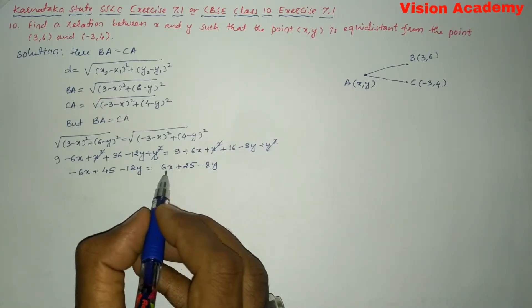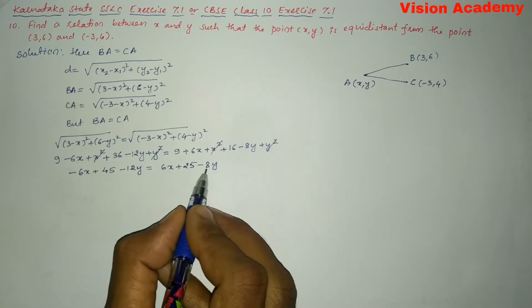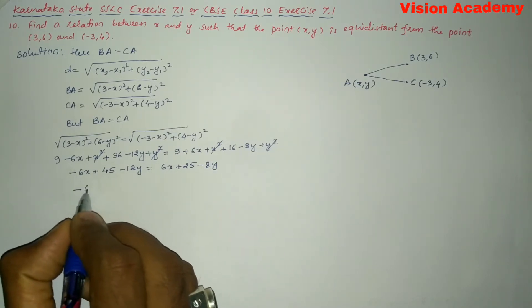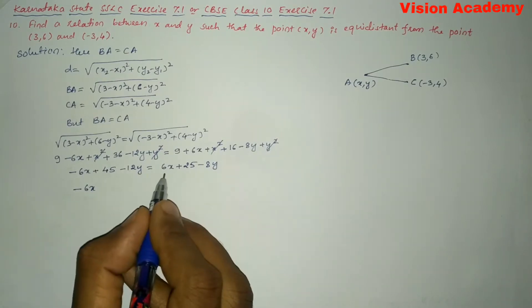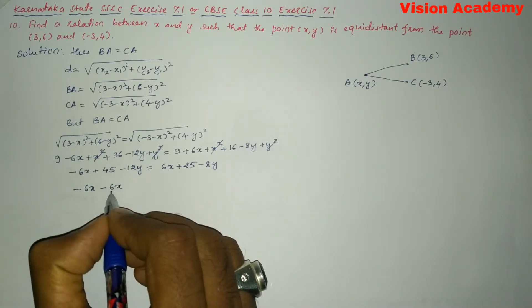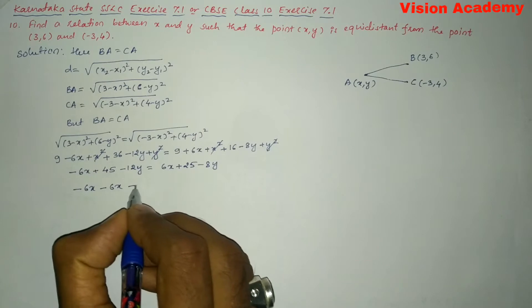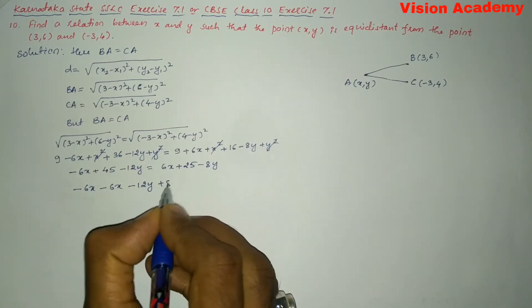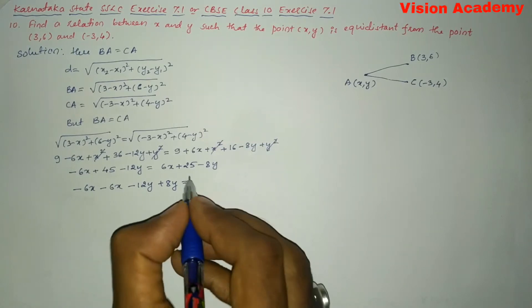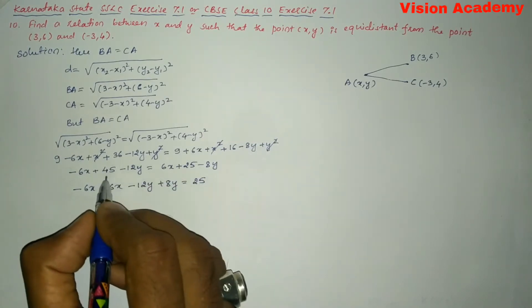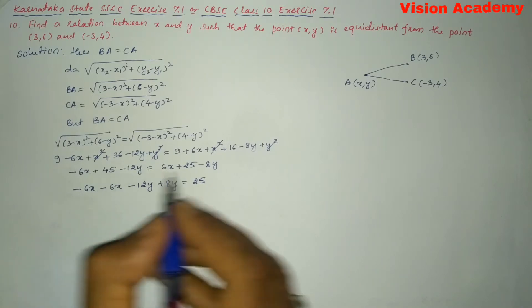Now, let us transform this 6X and minus 8Y from RHS to LHS. We can write -6X as is, and write this minus 6X because plus 6X once we transform from RHS to LHS it will become -6X - 12Y, and this -8Y will become +8Y is equal to 25. Keep this 25 on the right-hand side and transform this 45 from LHS to RHS.